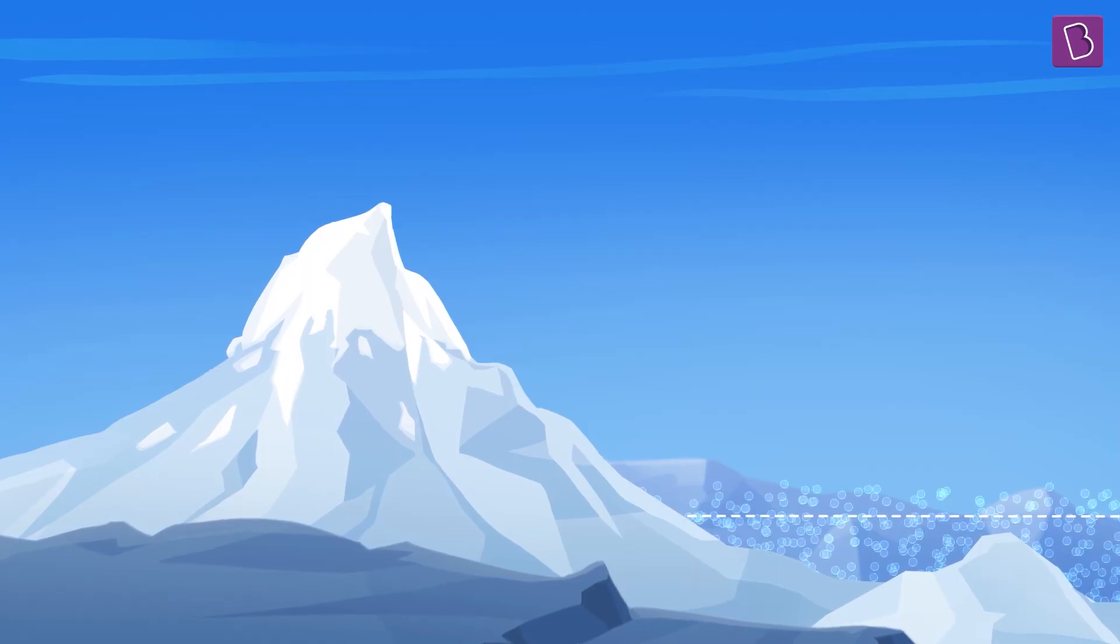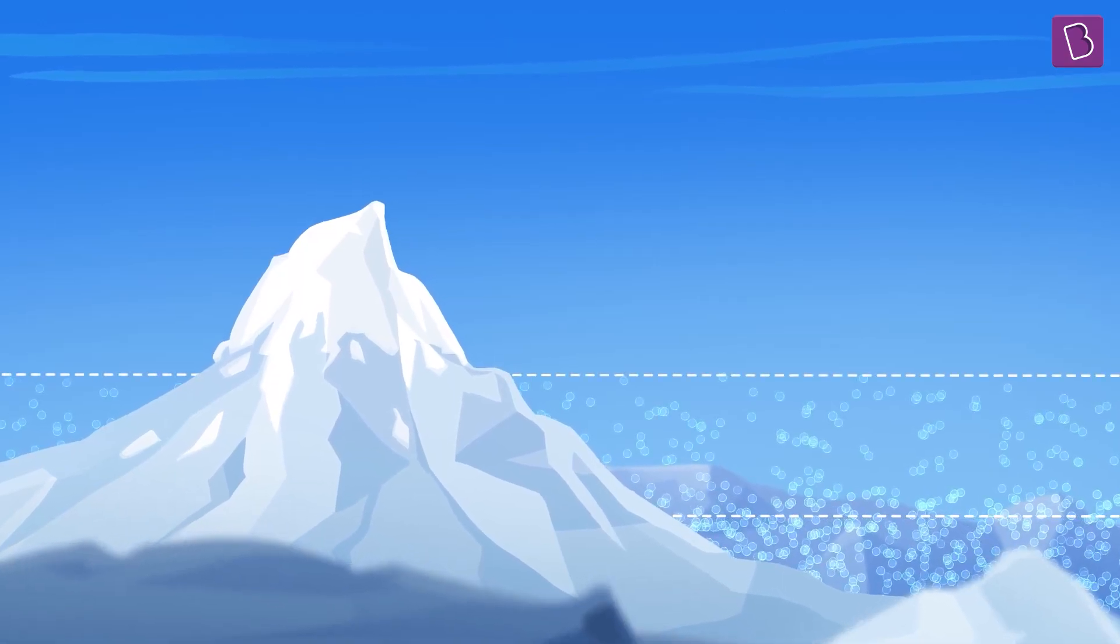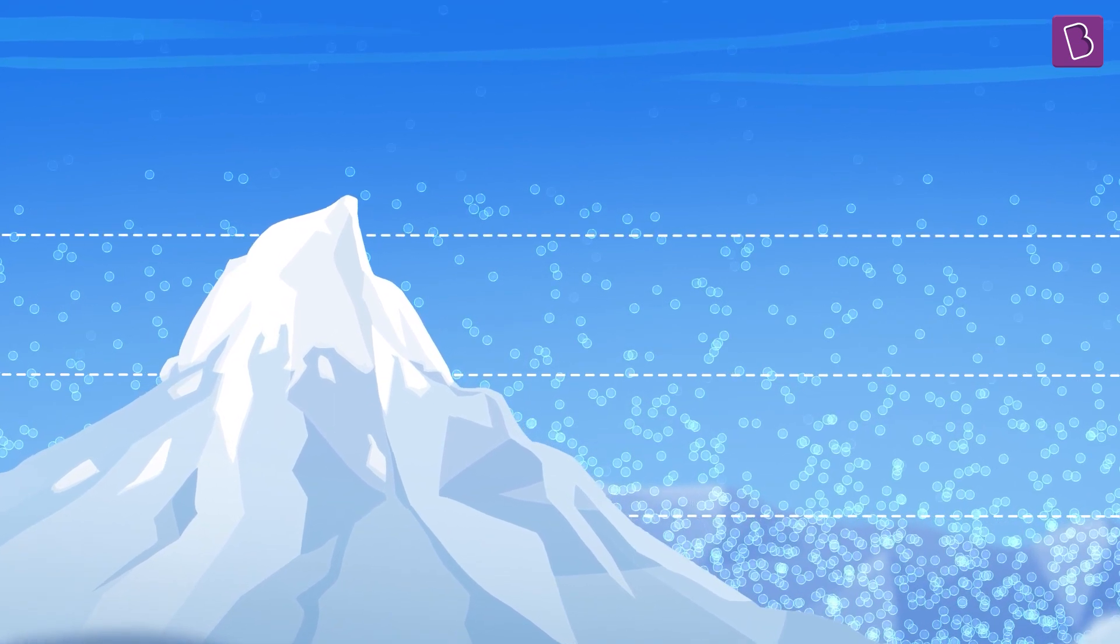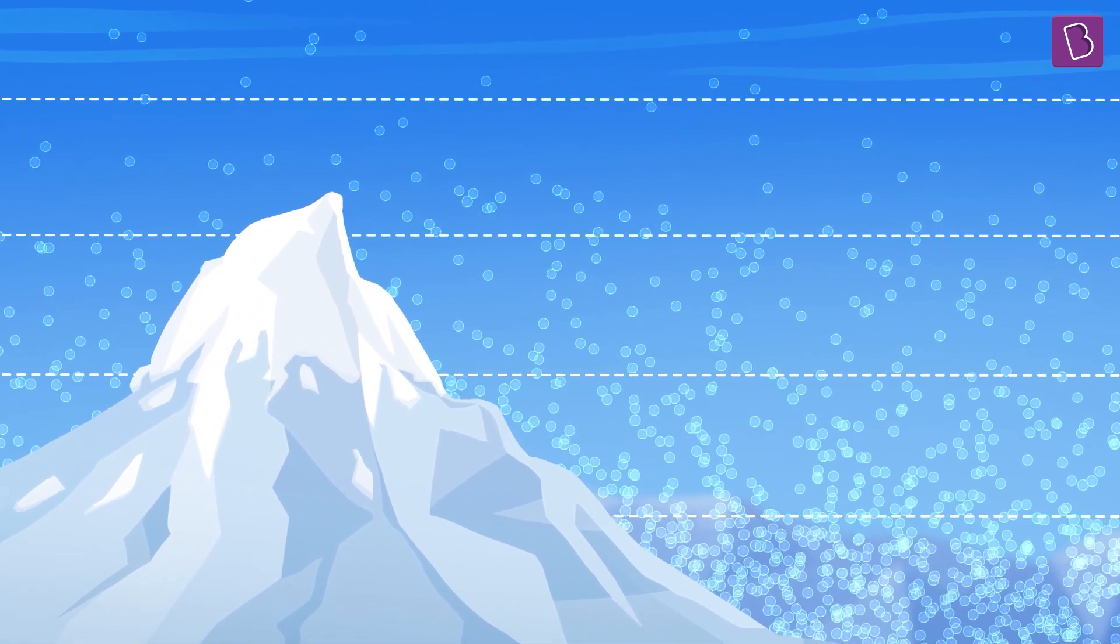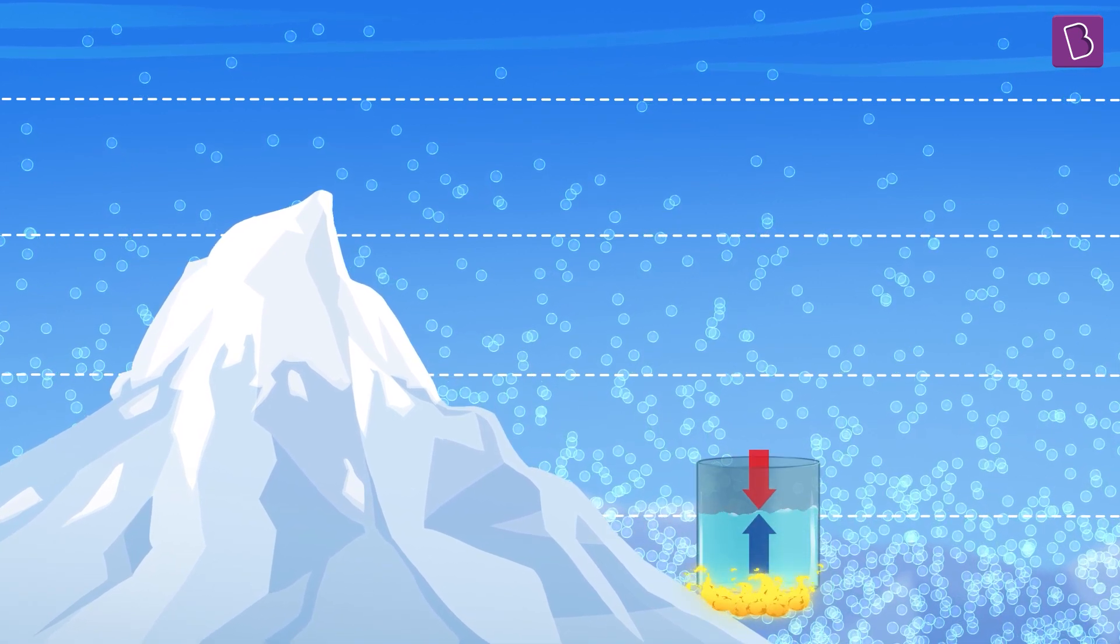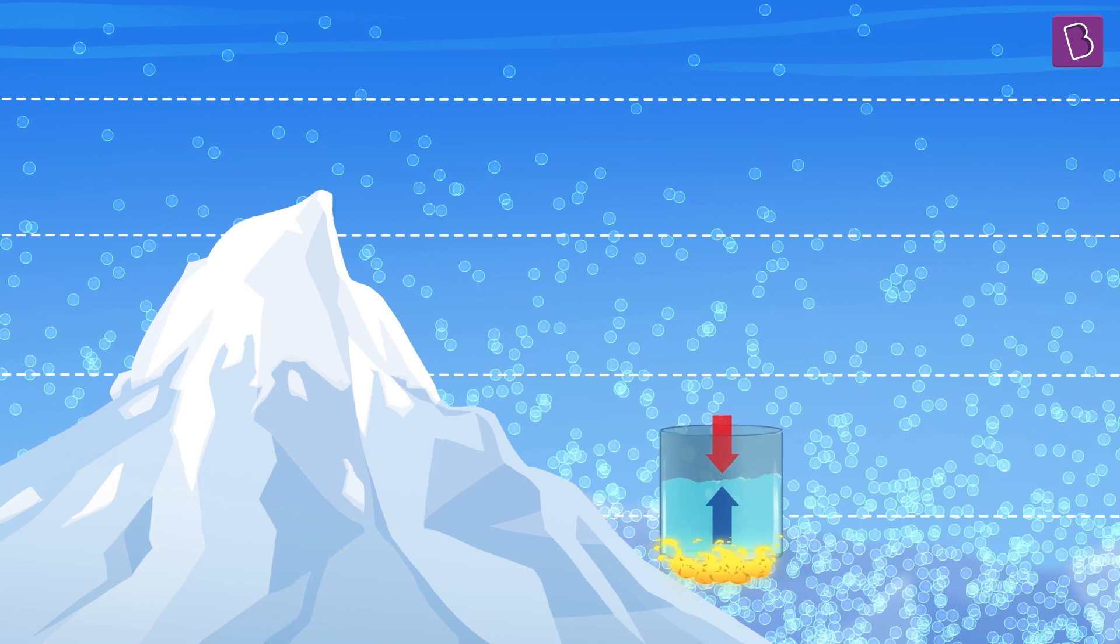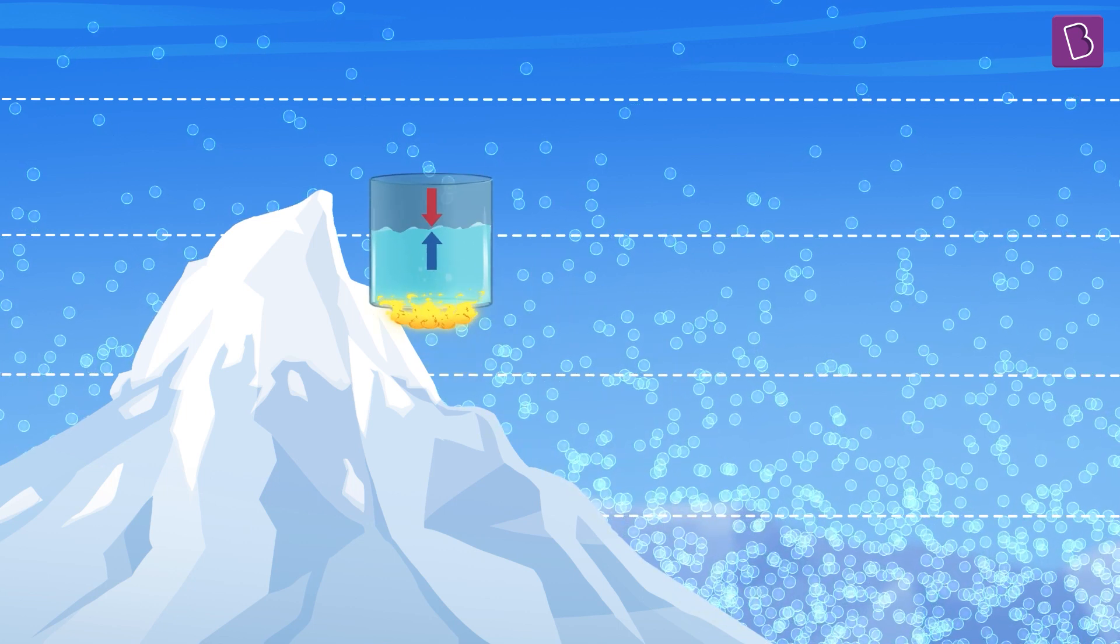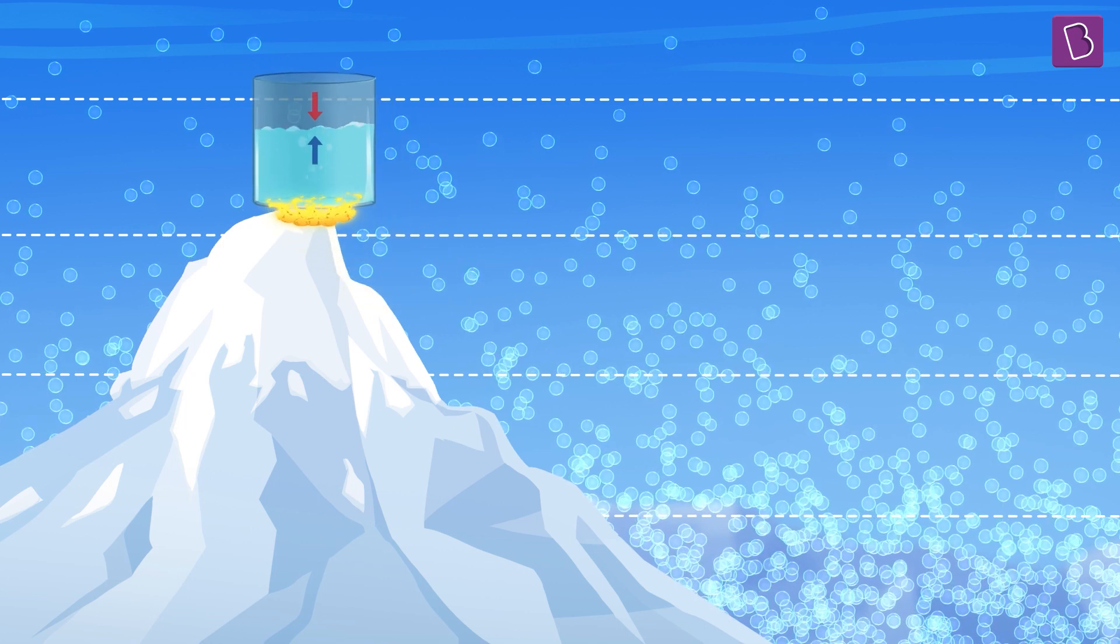You see, the air becomes thinner as we go higher up. And this causes atmospheric pressure to be lesser at higher altitudes. And under low atmospheric pressure, the liquid needs lesser vapor pressure to counter the atmospheric pressure. Which means lesser heat and a lower temperature for boiling.